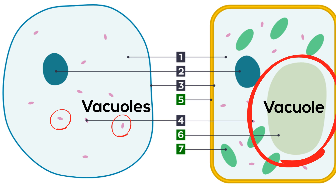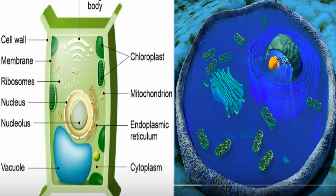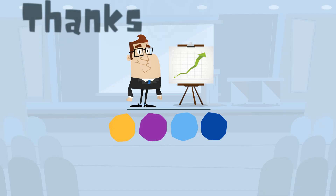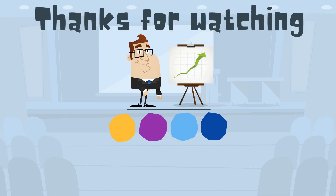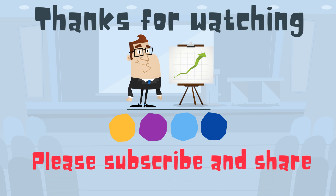So there we go, three ways that plant and animal cells are different. A plant cell has a cell wall. A plant cell has chloroplasts. And finally, a plant cell has a much larger vacuole than an animal cell. Thanks for watching — Moo Moo Math uploads a new math and science video every day. Please subscribe and share.